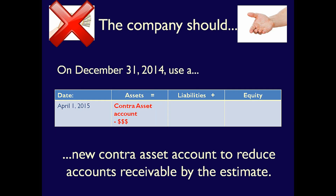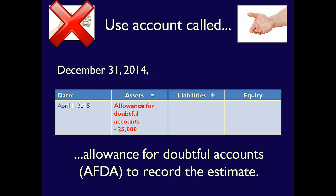Instead, what we need is a contra-asset account — a negative amount that will go against accounts receivable so that, when added together, the accounts receivable is equal to their future economic benefit. That account is called the Allowance for Doubtful Accounts, or AFDA. It's a contra-asset account similar to the accumulated depreciation account. The Allowance for Doubtful Accounts belongs in the element assets because it's a negative asset account.